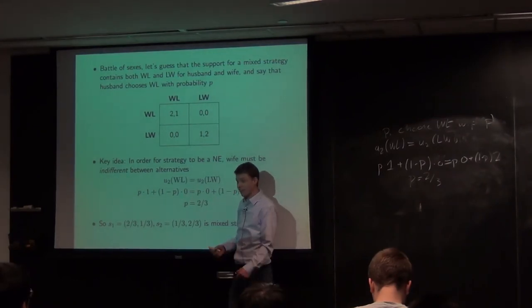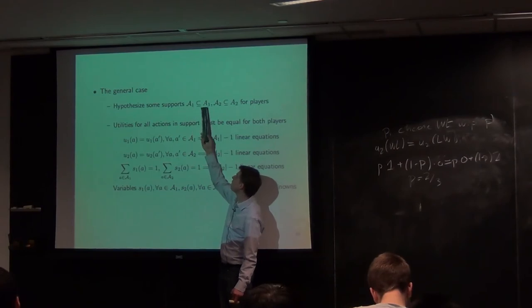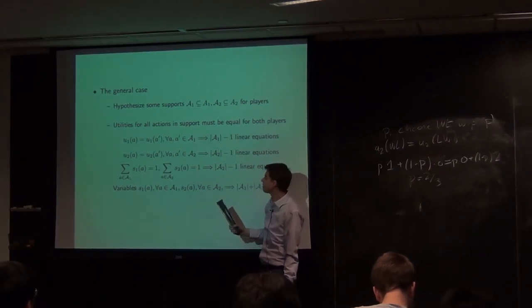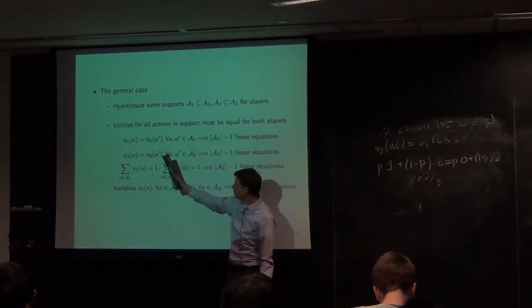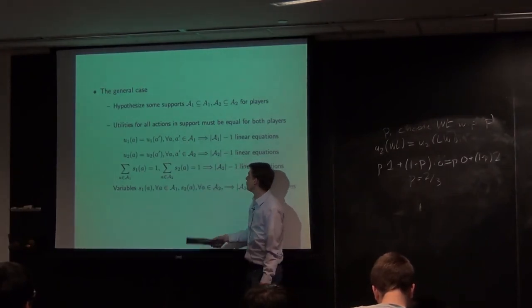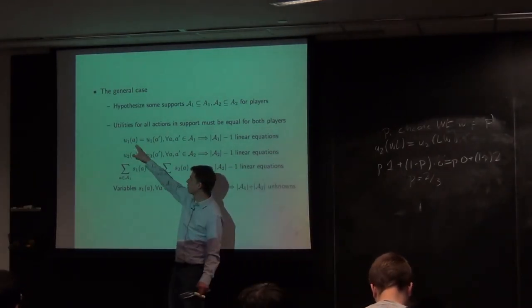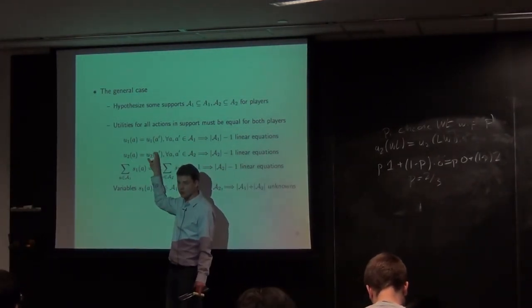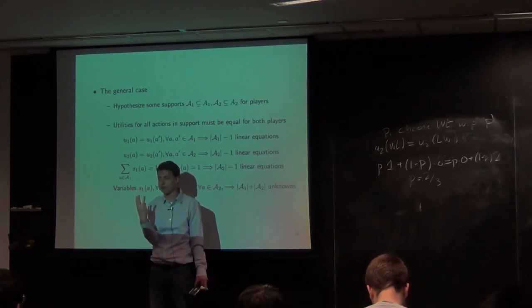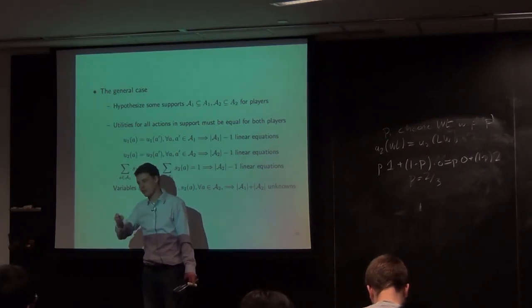The general case works the same way. You hypothesize some supports — script A_1 as a subset of actions A_1 and script A_2 as a subset of actions A_2. For this to be a Nash equilibrium, the utility of any two actions a and a' in the support must be equal. That gives us |A_1| minus one independent linear equations for player two, and similarly for player one.